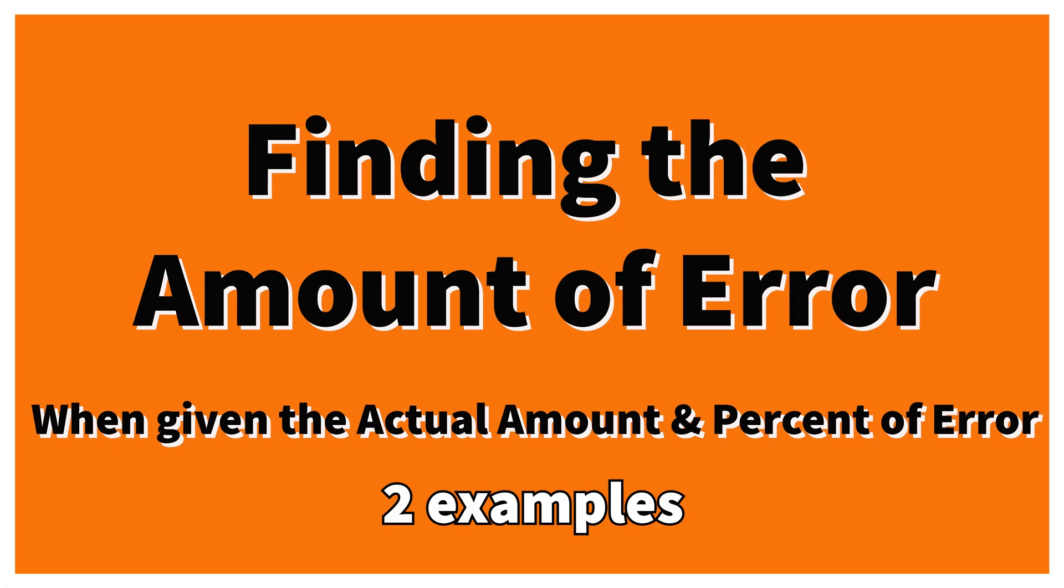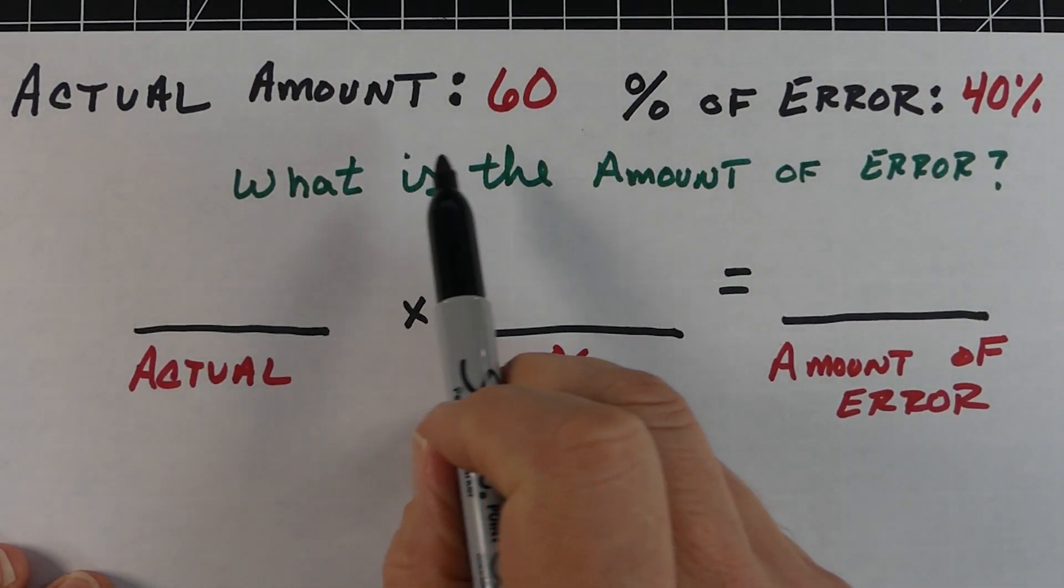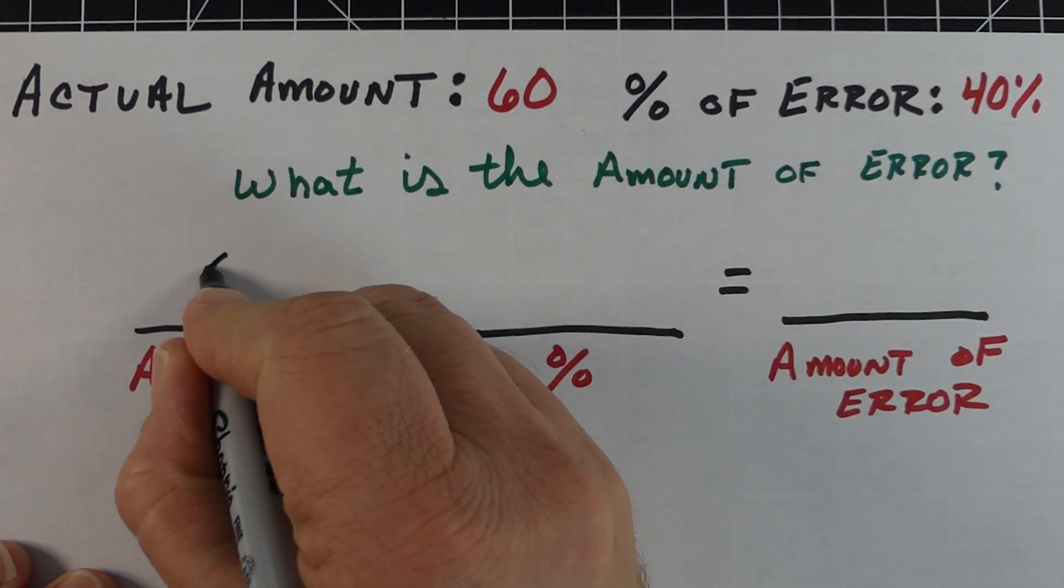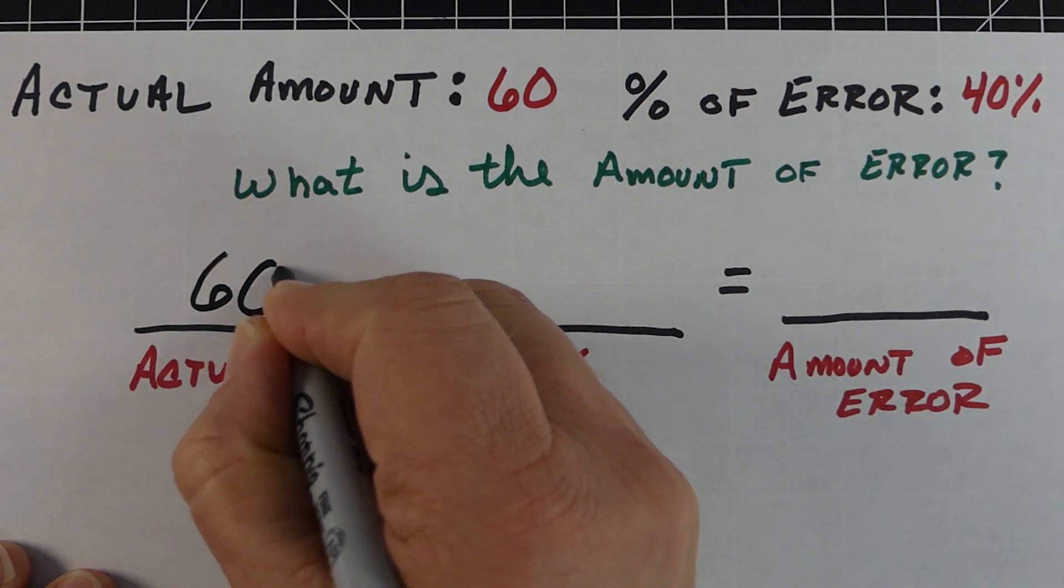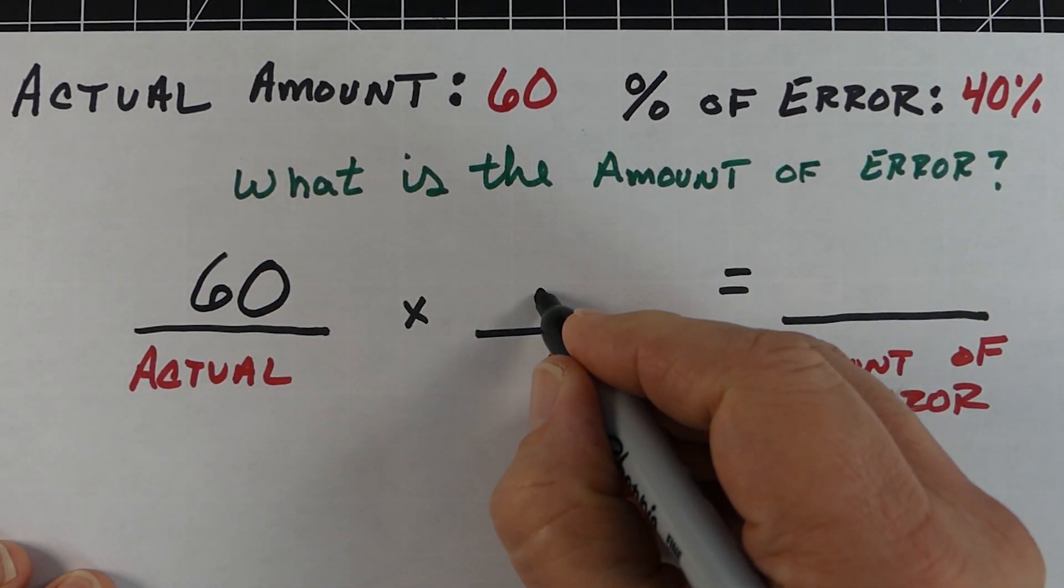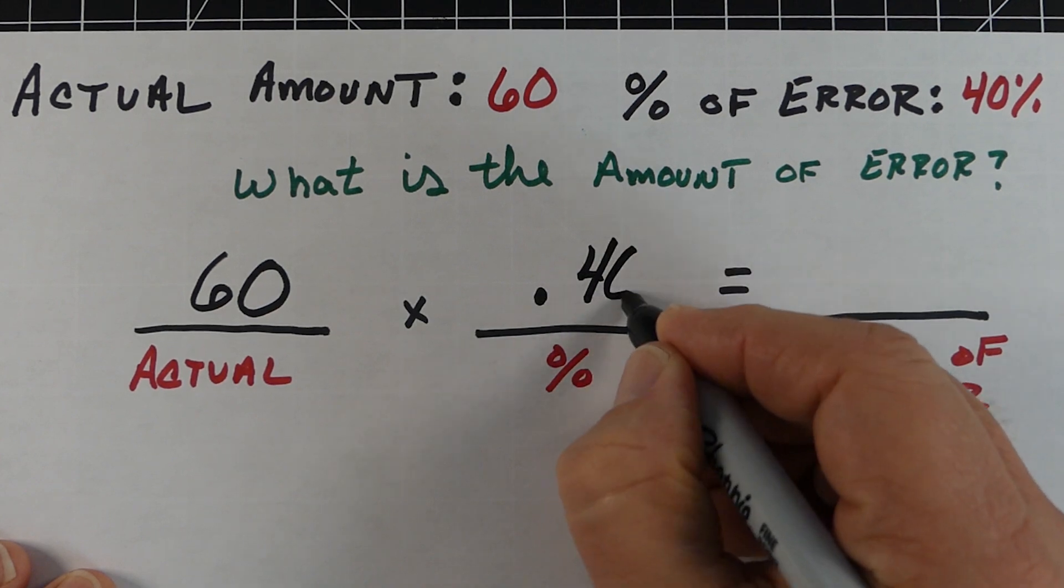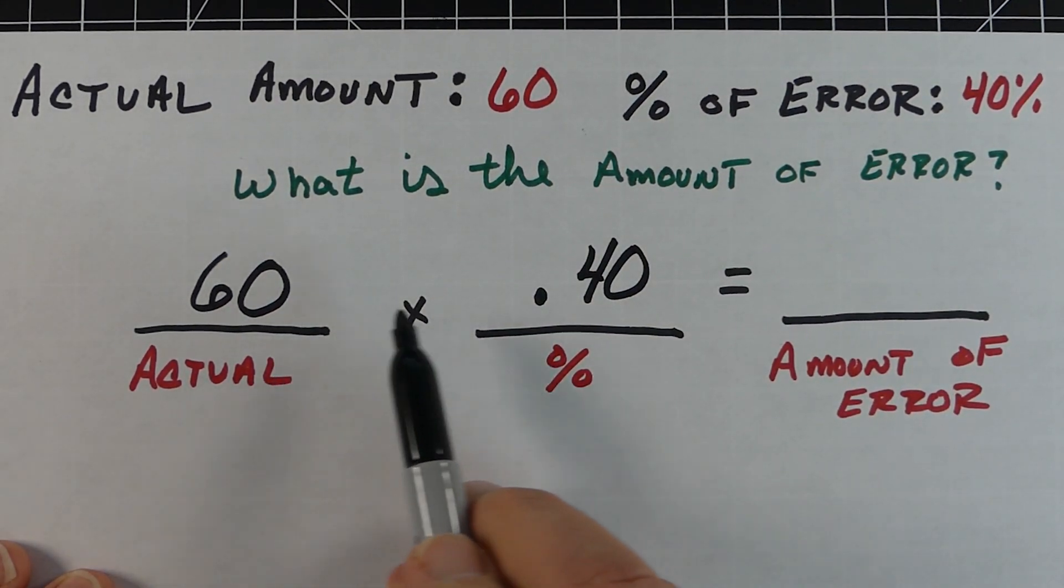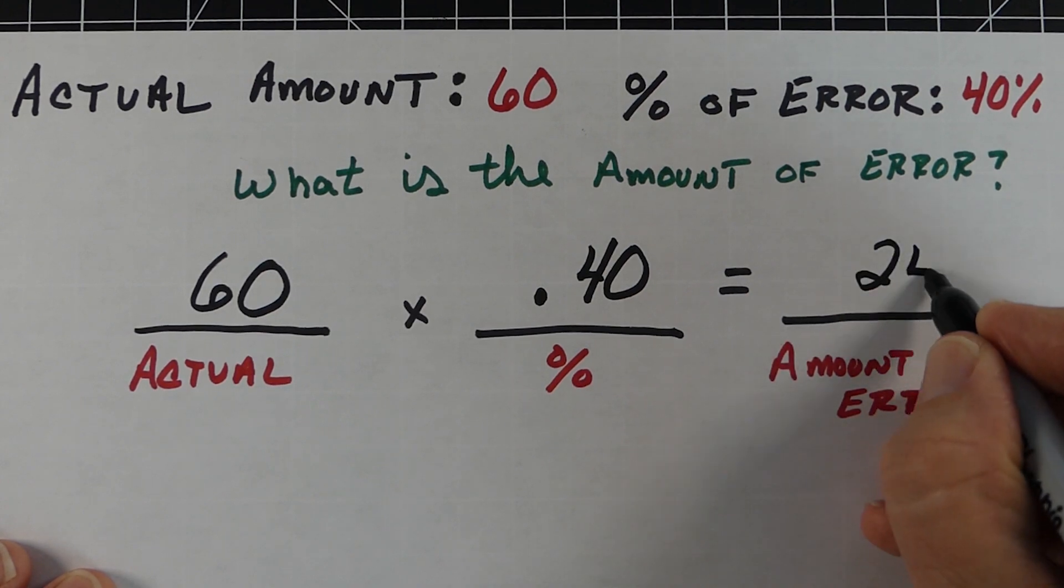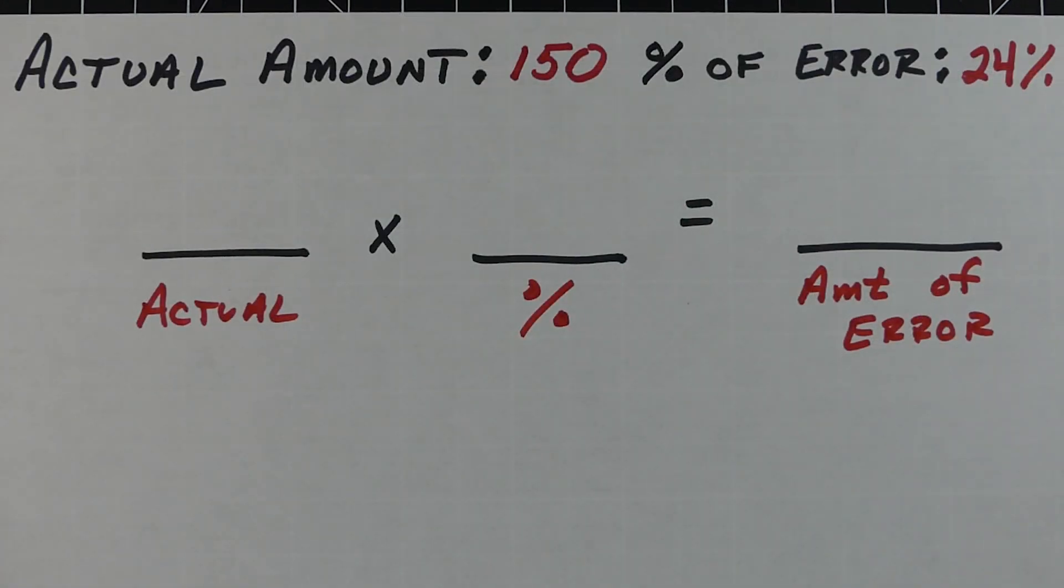Sometimes they'll give you the actual amount and the percent of error. This is actually the easiest one. So the actual or real amount was 60, our error was 40%, and we just basically multiply these straight across. If I take 60 times 0.4, we get 24. So the amount of error would be 24.